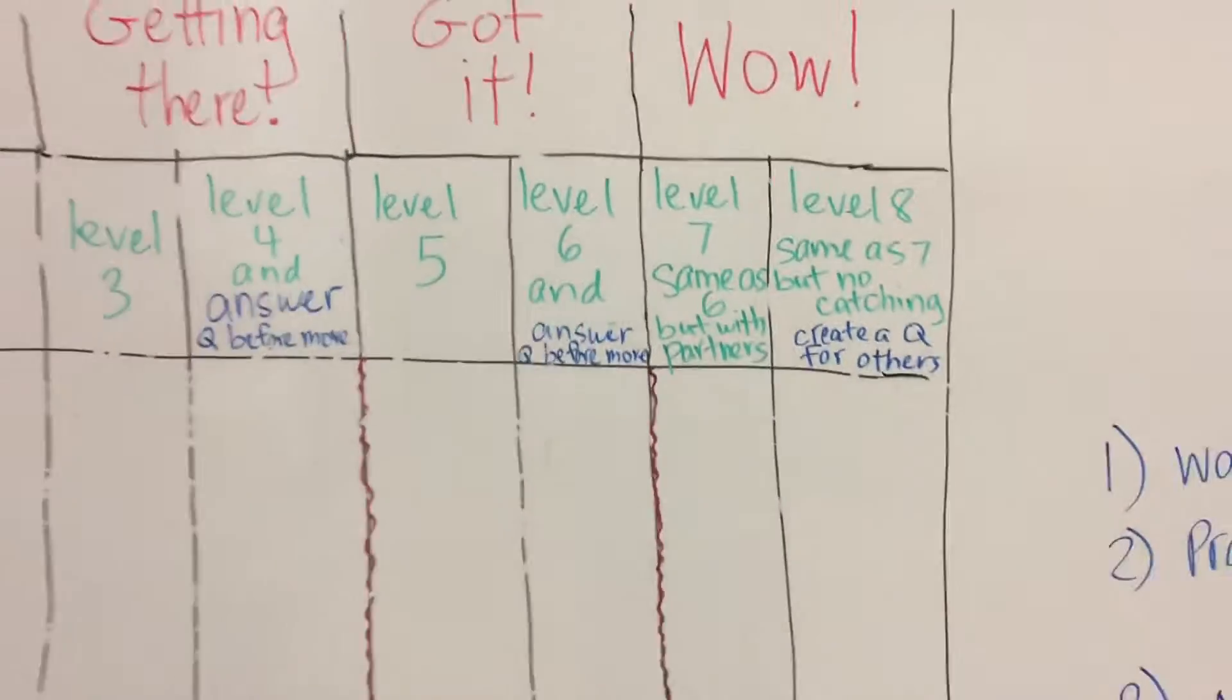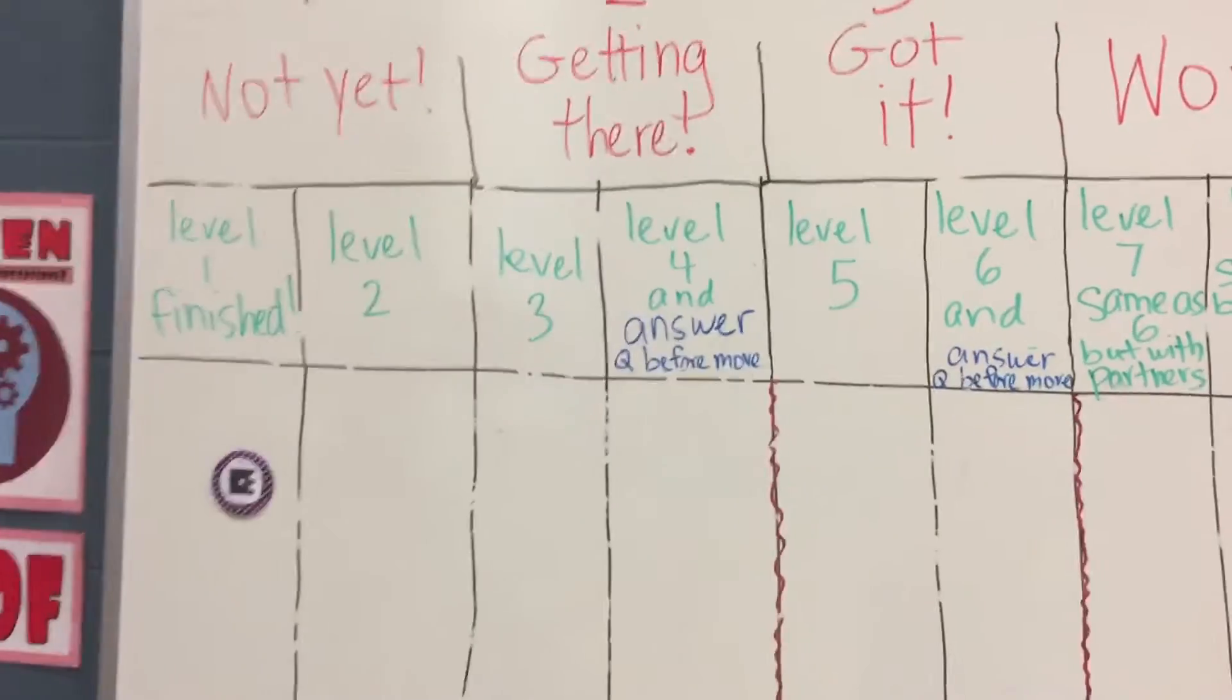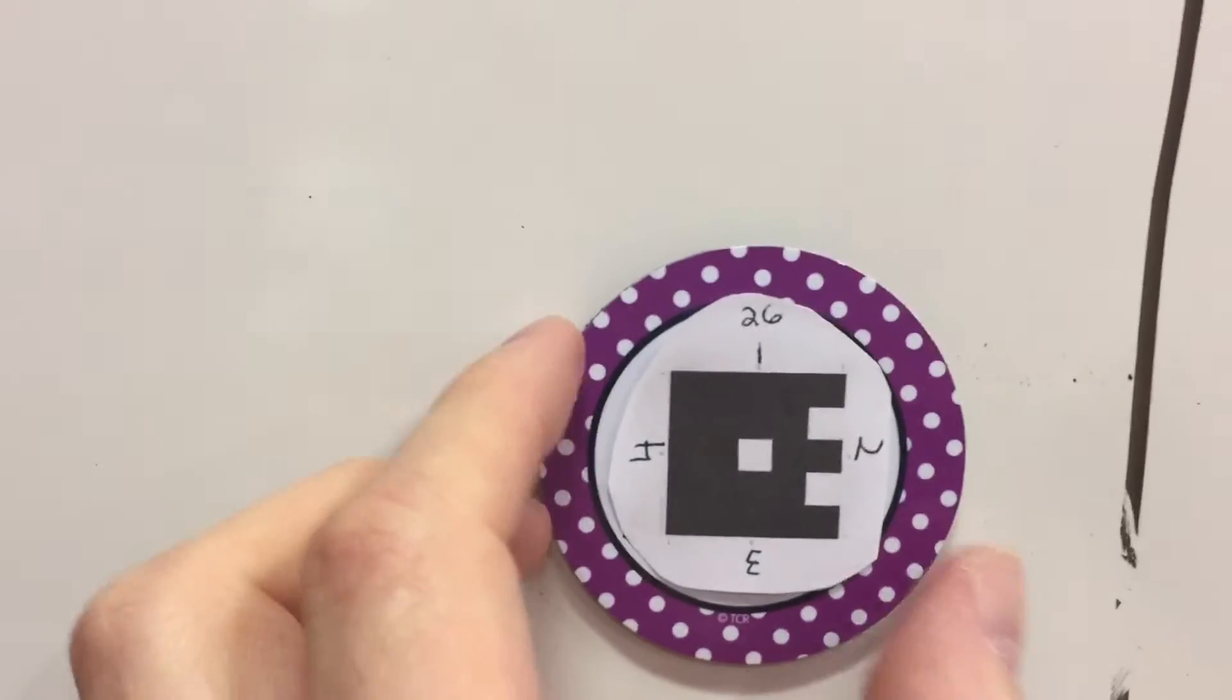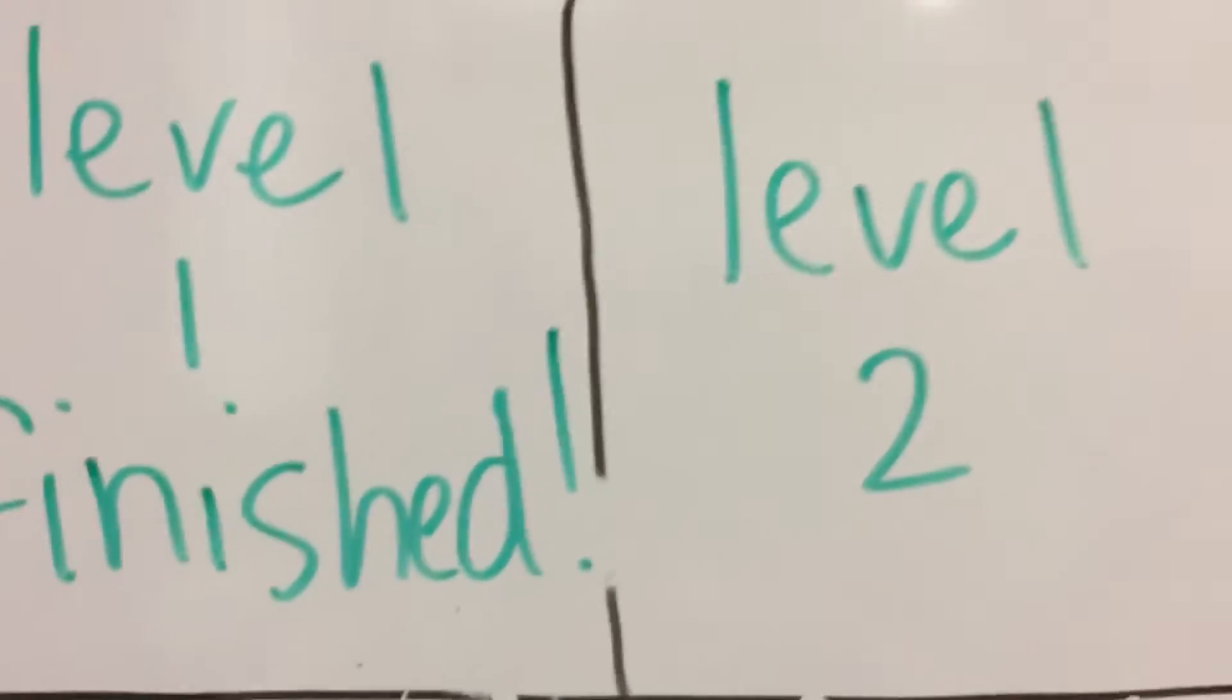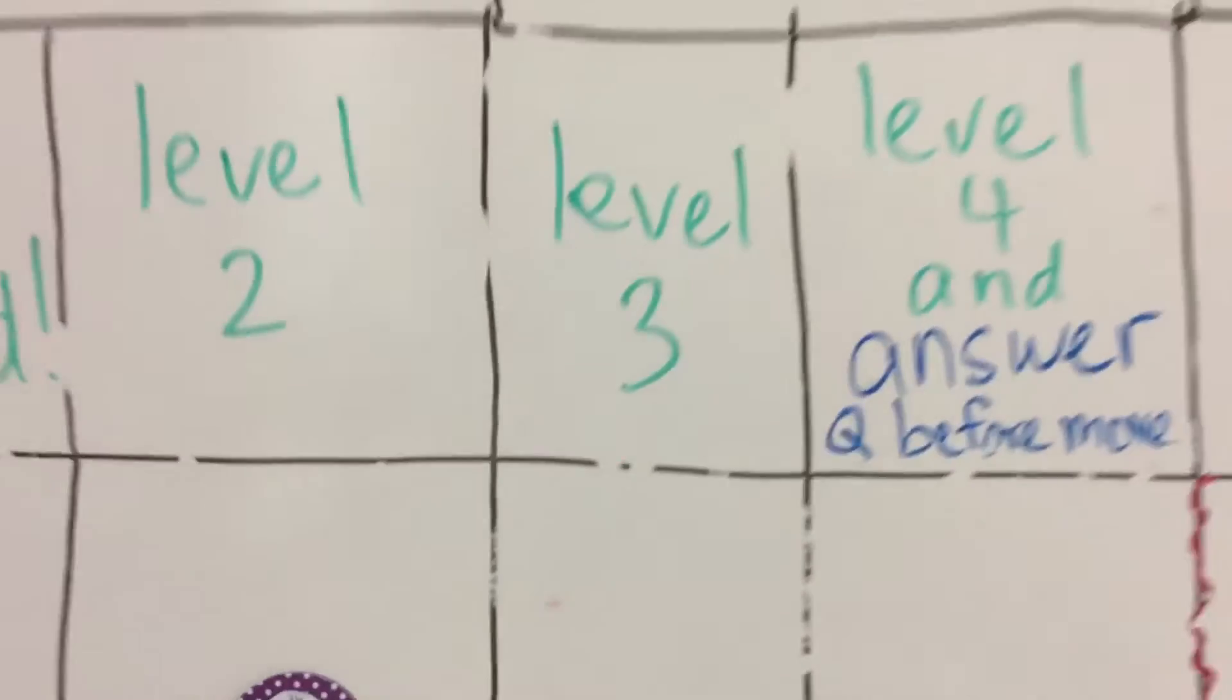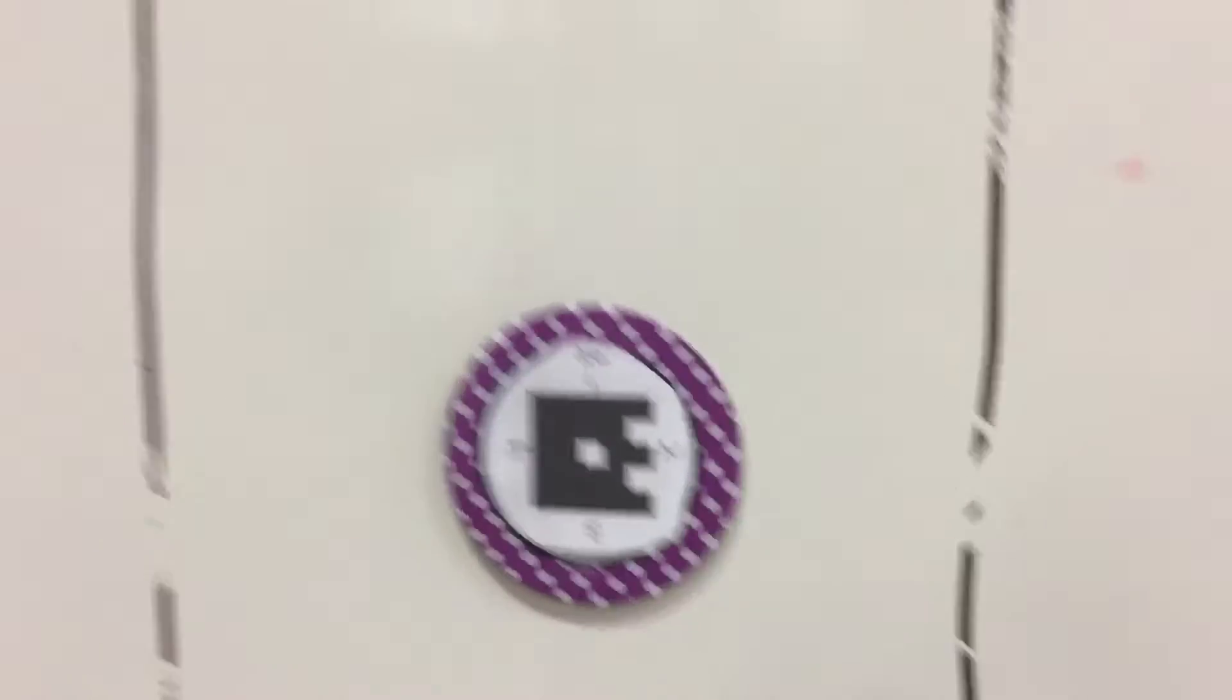And now once they get into each major category, there's two subsections in each one. They have to take their number, 26 whoever that would be, they have a one. Now if they're going into the next level, they still leave it at one because they're not quite at the getting there yet. It depends on what skills you're working on.